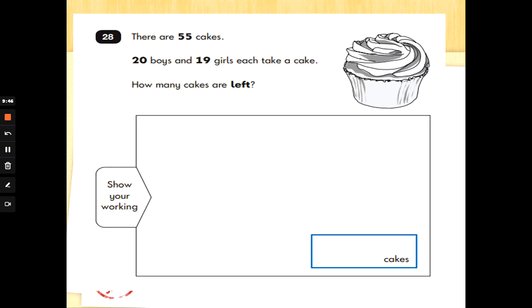Last question. And there's a working out box. We've probably got a lot to do. There are 55 cakes. 20 boys and 19 girls each take a cake. How many cakes are left? So we've started with 55 cakes. 20 boys take some cakes. So let's work out how many cakes are left after the boys have taken theirs. 55 take away 20. 55, 45, 35.